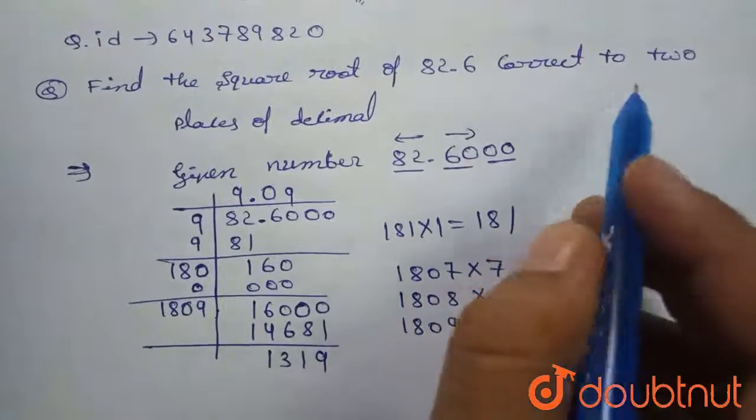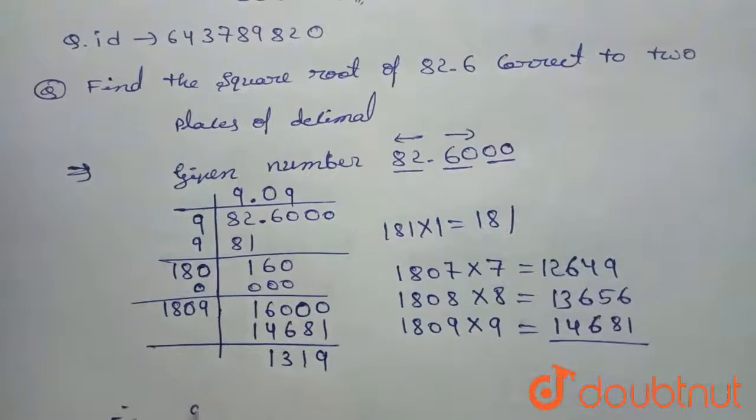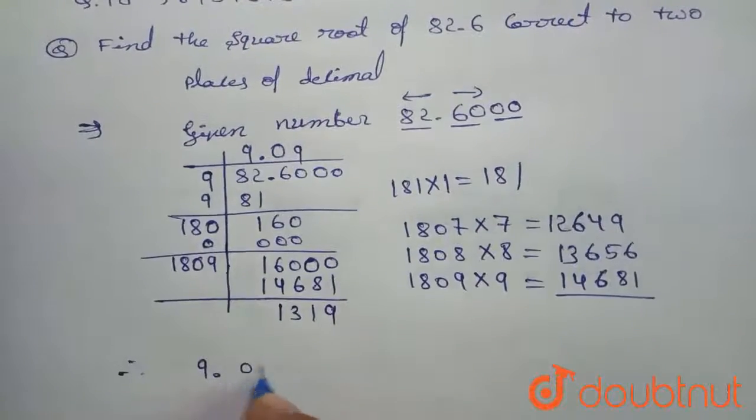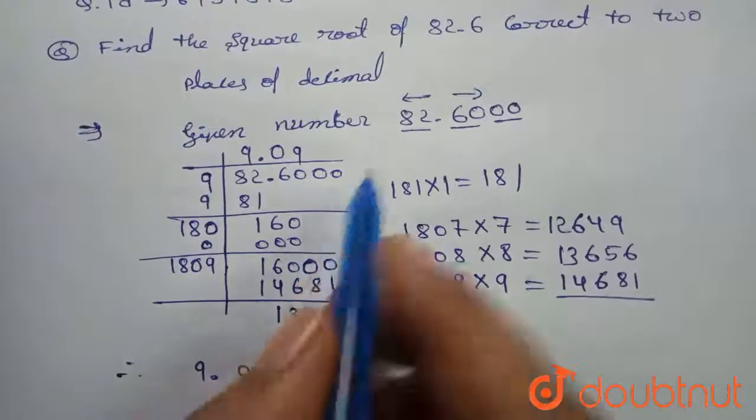We have to switch from two places of the decimal, therefore 9.09 is the square root of 82.6.